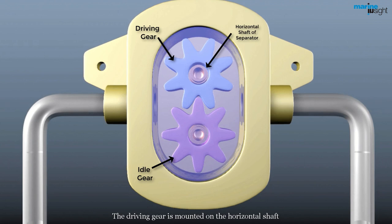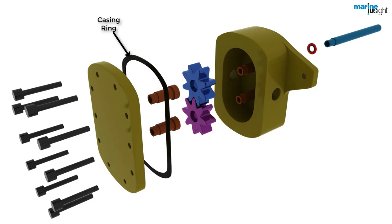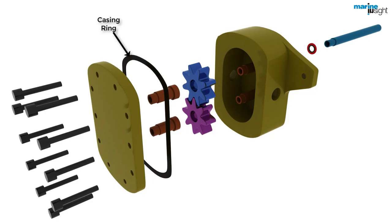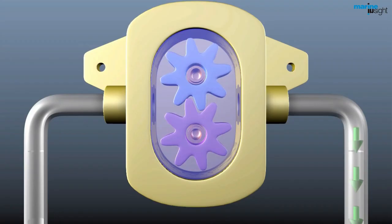It comprises of idle gear and a driving gear. The driving gear is mounted on the horizontal shaft. The body of the gear is provided with a casing ring and the horizontal shaft end is provided with a sealing ring. These rings will not allow the fuel oil to leak outside the gear case or towards the purifier lube oil sump. Each gear sits on a bush for proper fitting and rotation.